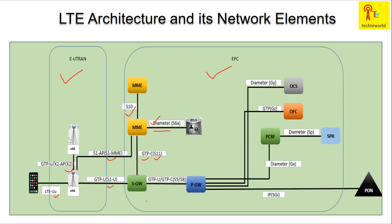The SGW and PGW are connected via S5 and S8 interfaces. S5 is for the home network, and S8 is for roaming — for visitor scenarios. The protocol used for both S5 and S8 is GTPU and GTPC.